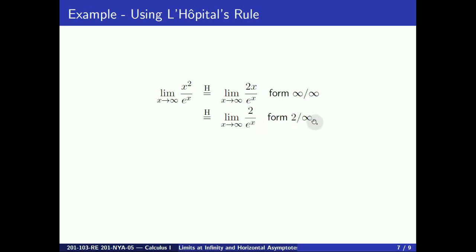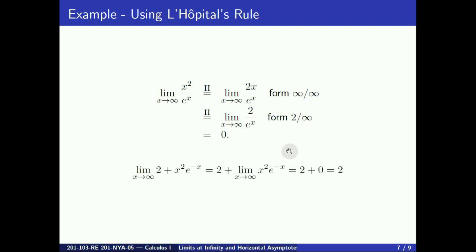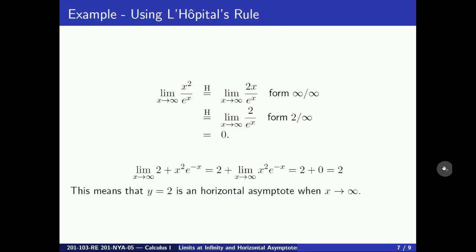This time the limit is of the form 2 over infinity. If we divide 2 by increasingly large numbers, we get numbers that are very small, so the limit is 0. Overall, the limit of 2 plus x squared e to the minus x is 2 plus 0, which is 2. So y equals 2 is a horizontal asymptote when x goes to infinity.